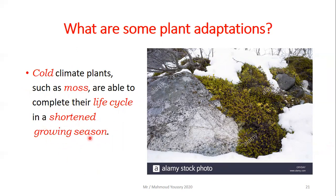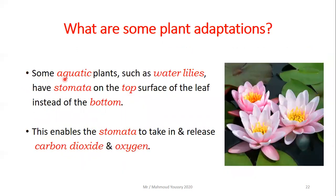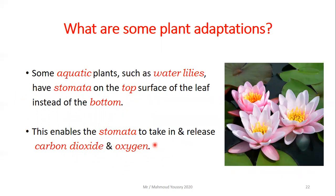Other plants are called aquatic plants, meaning they live in water. Some aquatic plants such as water lilies have stomata on the top surface of the leaf instead of the bottom. In ordinary plants, stomata are on the lower side of the leaf. This enables the stomata to take in the carbon dioxide needed for photosynthesis and release oxygen as a product of photosynthesis.